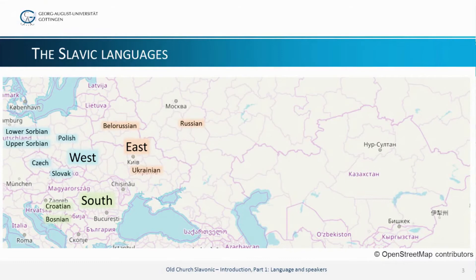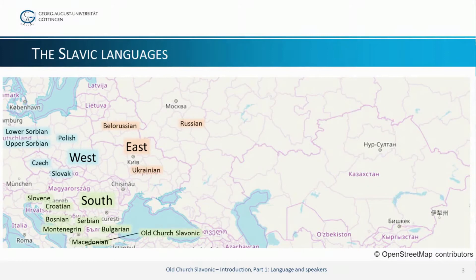The South Slavic group includes Bosnian, Croatian, Montenegrin, Serbian and Slovene, Bulgarian and Macedonian. Old Church Slavonic is not a modern language, but it's most closely related to modern Bulgarian and Macedonian.